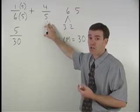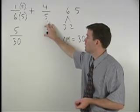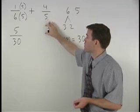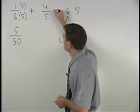For our second fraction, we have a five in the denominator, and we want a common denominator of thirty, so we must multiply this five by six.